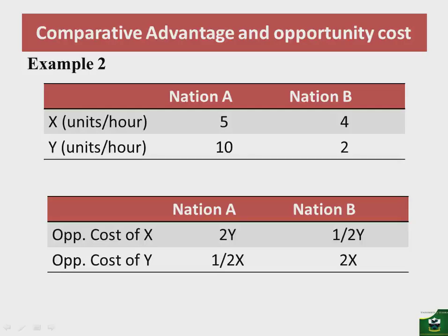Clearly, nation A has a lower opportunity cost in the production of commodity Y — giving up only 1/2 X — compared to producing X, where it gives up 2Y. Nation B has a lower opportunity cost in the production of commodity X — giving up only 1/2 Y — but a higher opportunity cost in the production of commodity Y — giving up 2X.